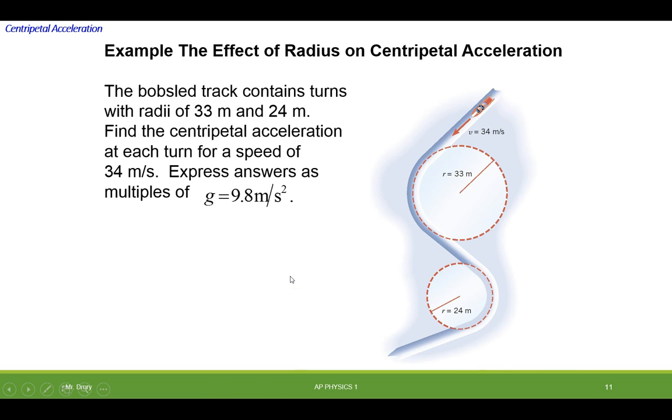Let's look at a problem with centripetal acceleration. So you've got a bobsled coming down the chute and it's making this turn and then it's making this turn. The bobsled contains turns with a radius of 33 meters and 24 meters. Find the centripetal acceleration at each turn for a speed of 34 meters per second and express the answers as multiples of g. Now, which one do you think should give you more acceleration? The one with the bigger radius or the one with the smaller radius?